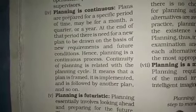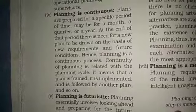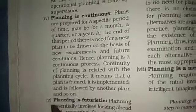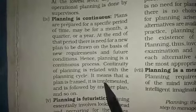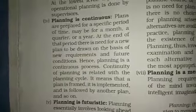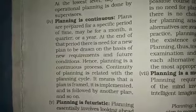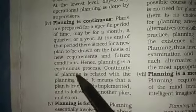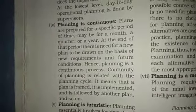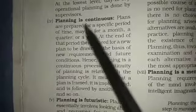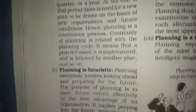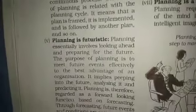Continuity of planning is related to the planning cycle: a plan is framed, it is implemented, and is followed by another plan, and so on. Once an organizational goal is achieved, you strive for more — so in the next financial year you need another plan, then another in coming years. It is like a cycle that goes on and on, which is why planning is a continuous process.